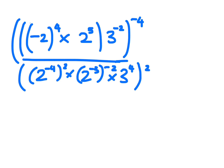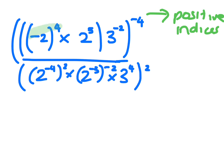We're going to look at writing and simplifying this, and we want to write it with positive indices. So when you're doing this, you need to go inside out. If you go to the inside, you need to do the inside first.